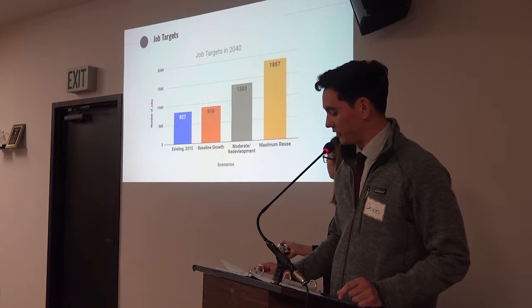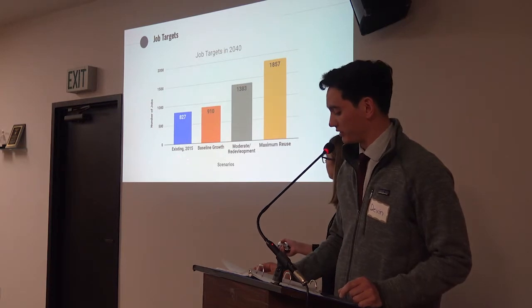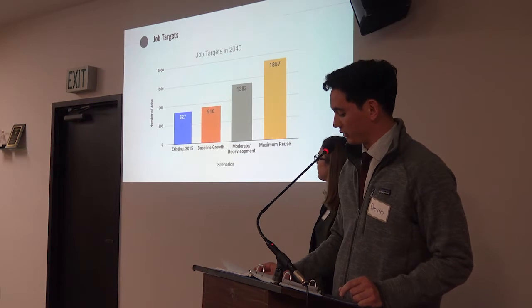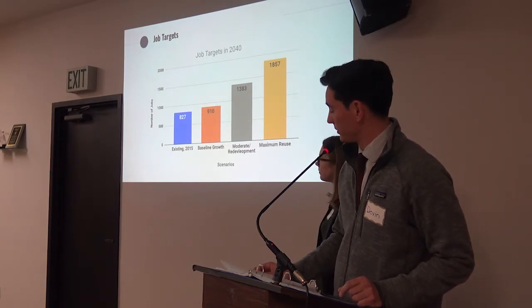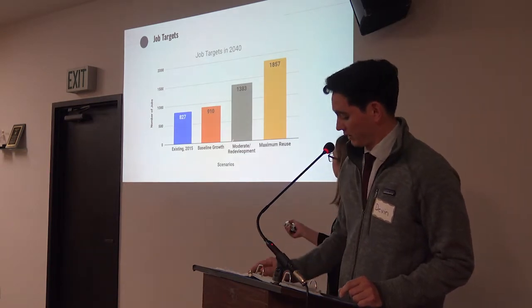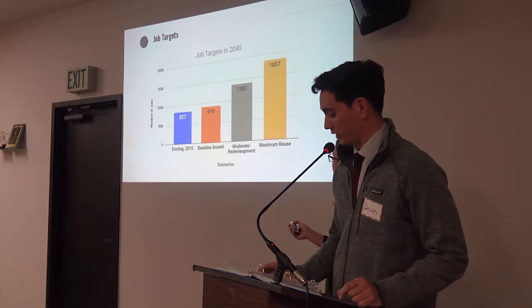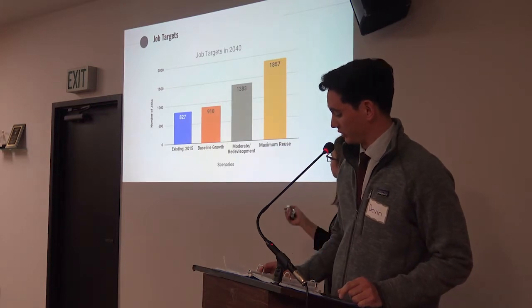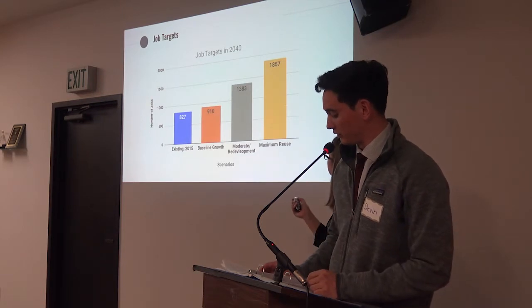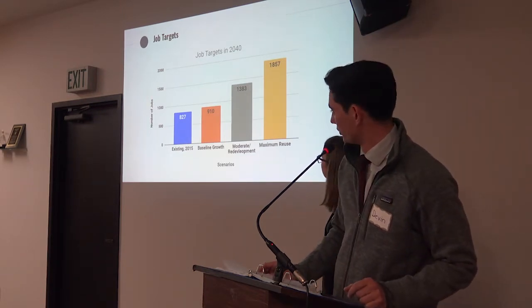According to census data, in 2015 there were 827 jobs in Oceano. The future job availability for all three alternatives by the year 2040 are as follows: for baseline growth, 910 jobs, shown in orange; for the moderate growth alternative, roughly 1,400 jobs, shown in gray; and for the maximum growth alternative, roughly 1,900 jobs, shown in gold.